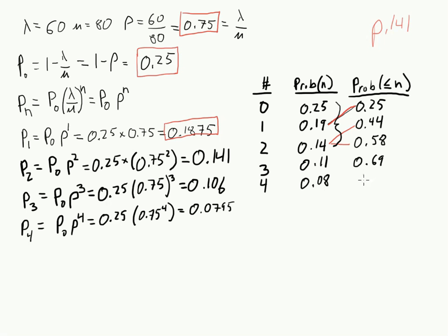The probability of having four people or less, we'll take the probability of three or less and add on that 8%. So we are at 77. So 77% of the time, we have four people or less in our system.